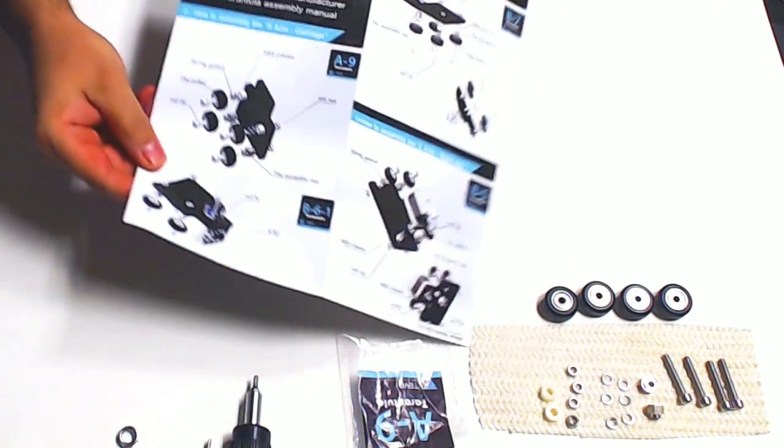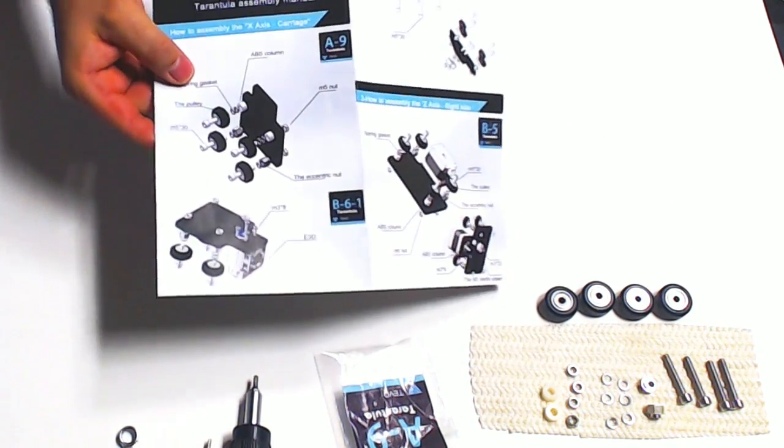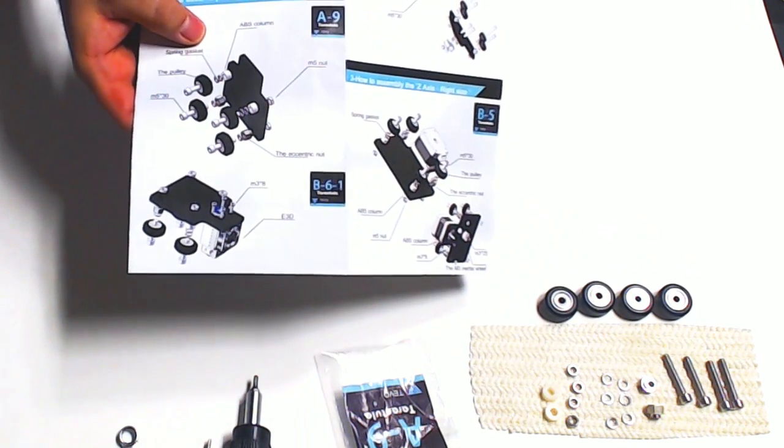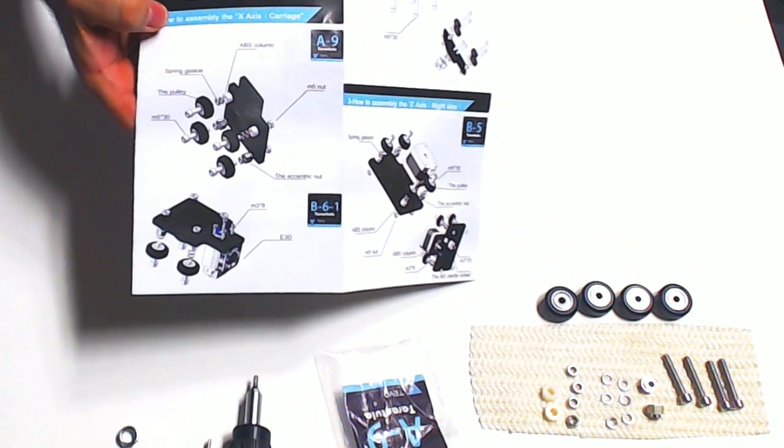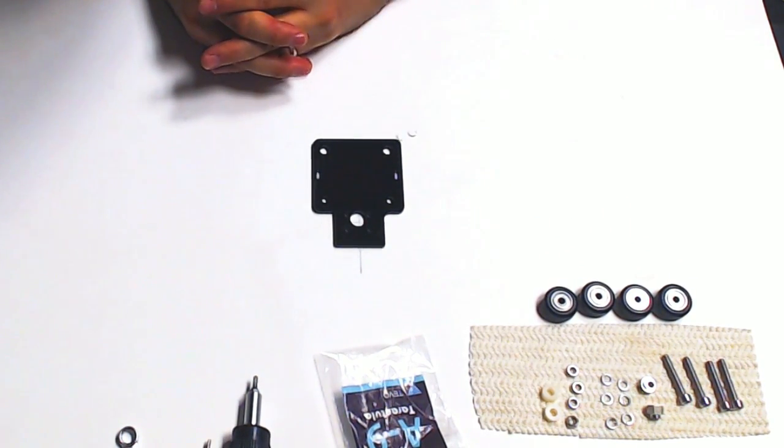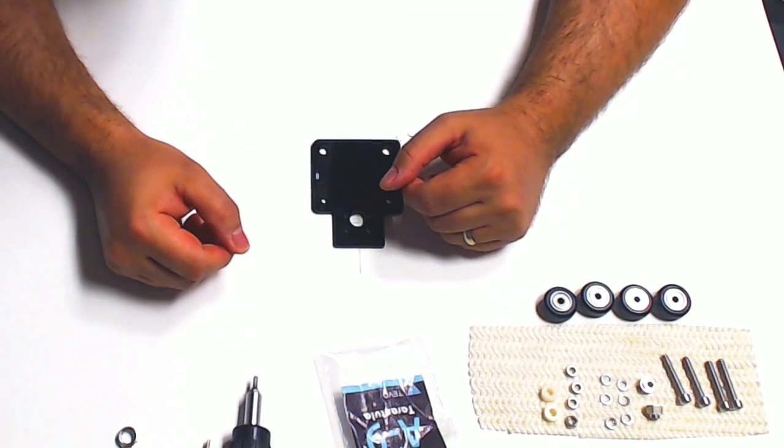So we're going to start with step one here, which is A9. So I have my A9 bag out. We'll go through these two steps and I'll tell you what I'm doing along the way. I'm also going to do a few changes. This printer has been out for a couple of weeks and a lot of people on the forums have been coming up with cool ways to improve it. So I'm going to show you some of those ways as we build.